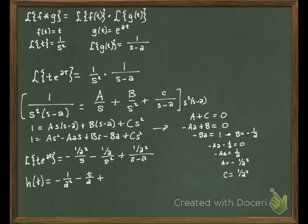E to the AT. So this would be plus one over A squared E to the AT. Is that the same answer that we got when we did it using the convolution integral? So we haven't proven it, but we have verified that in this particular case I get the same function.